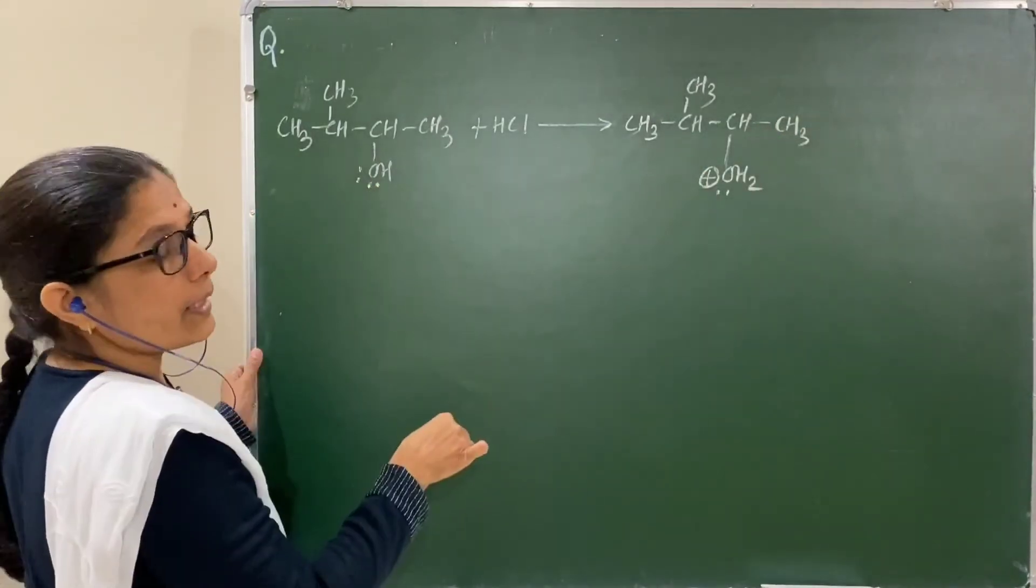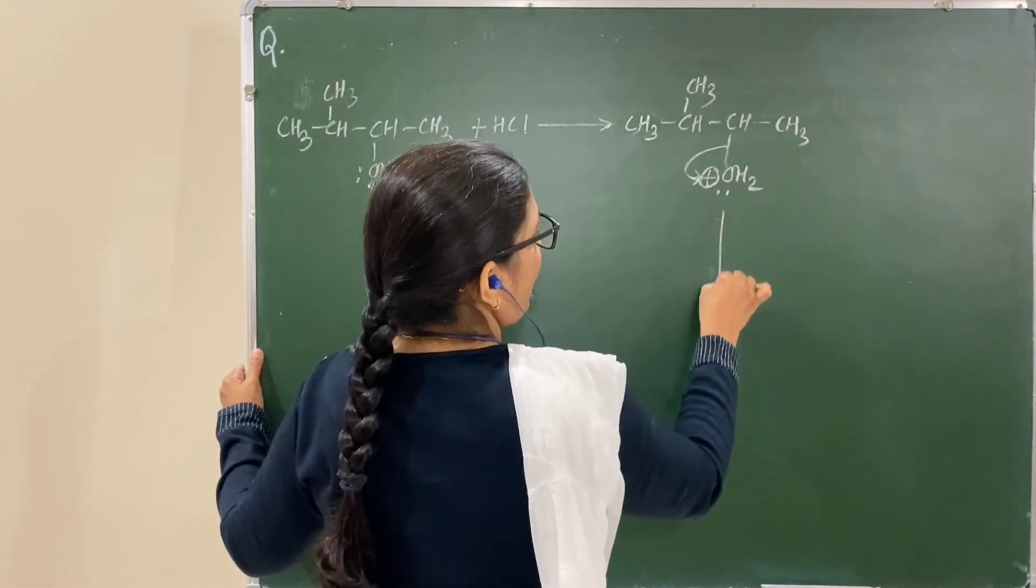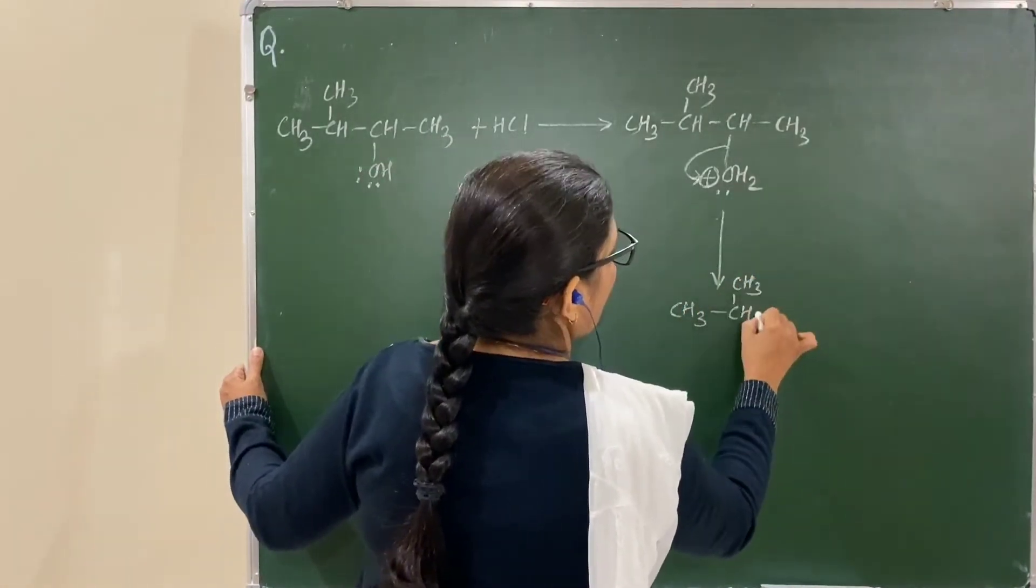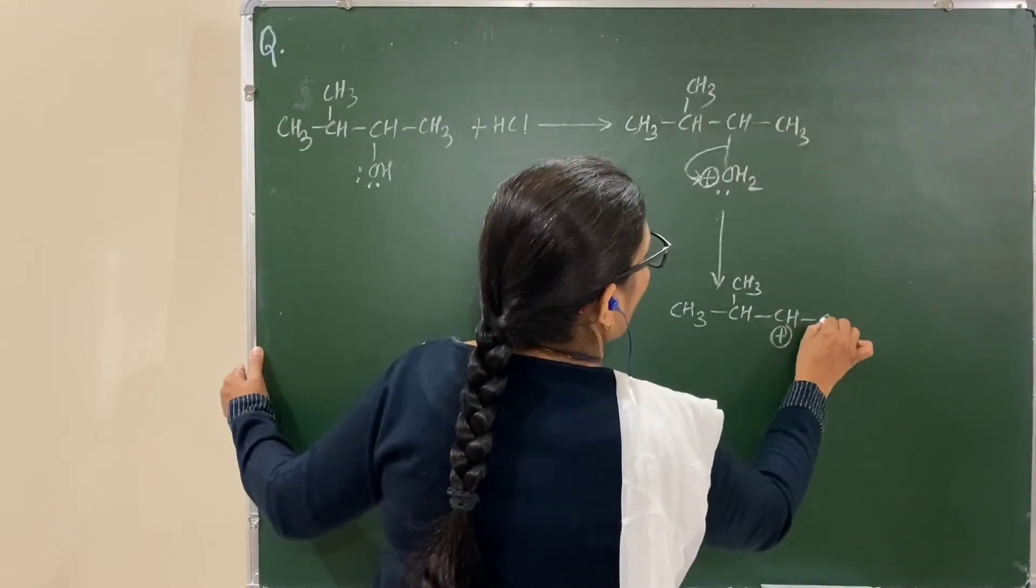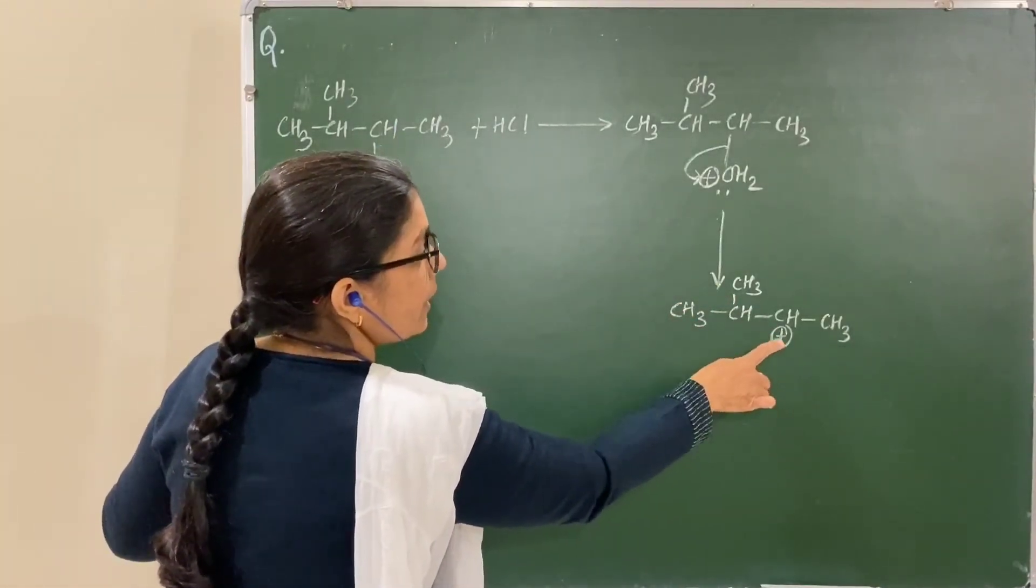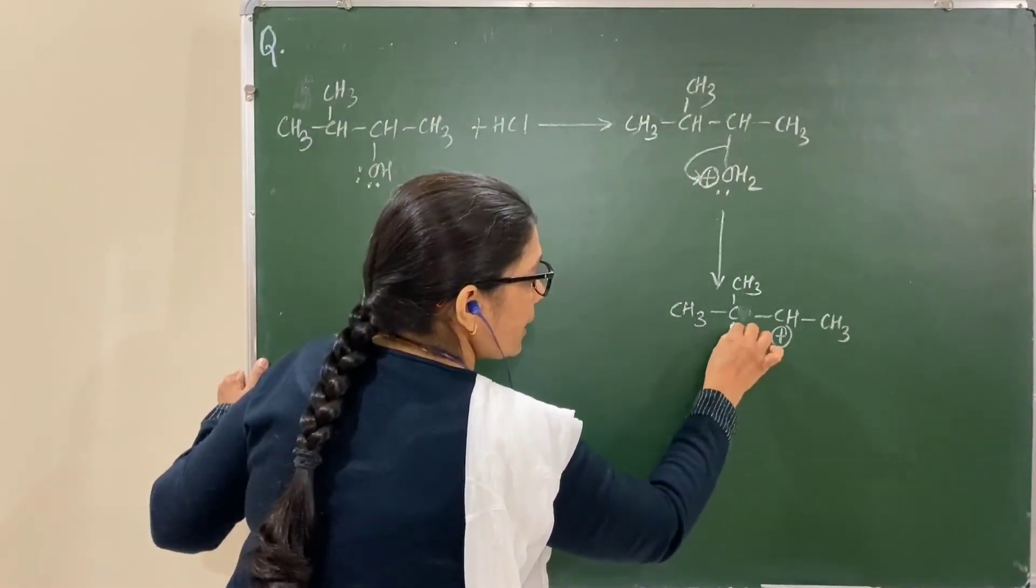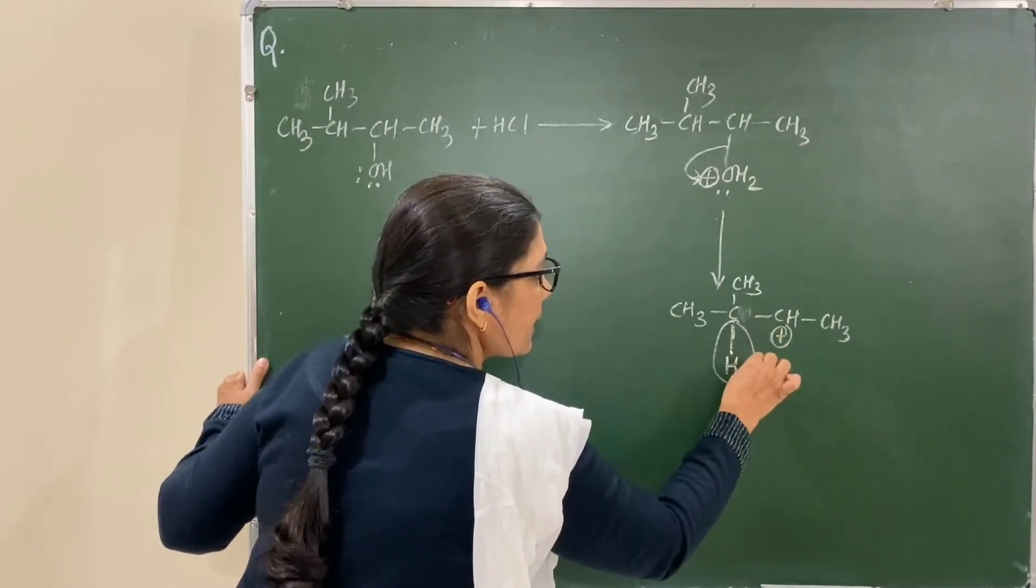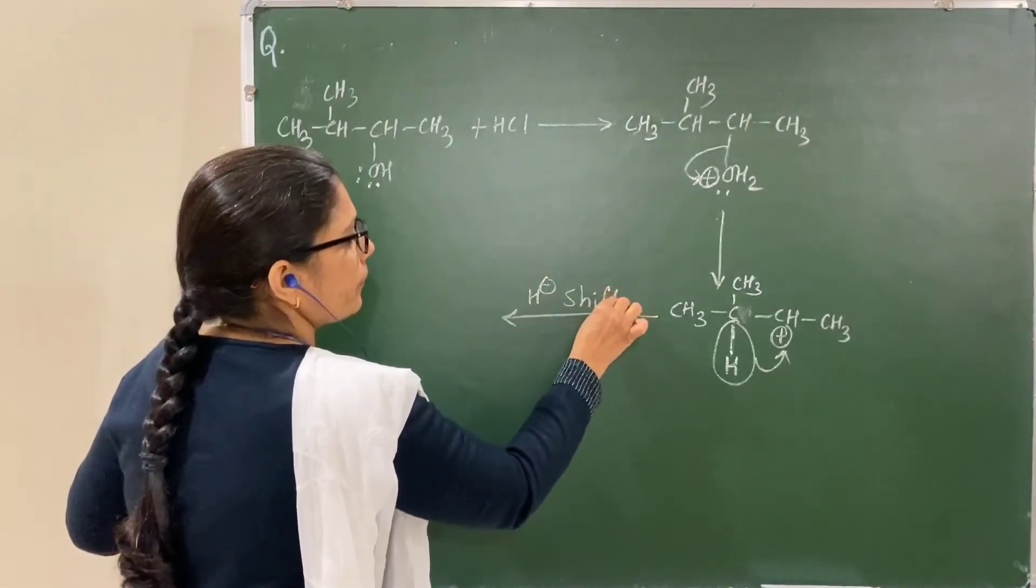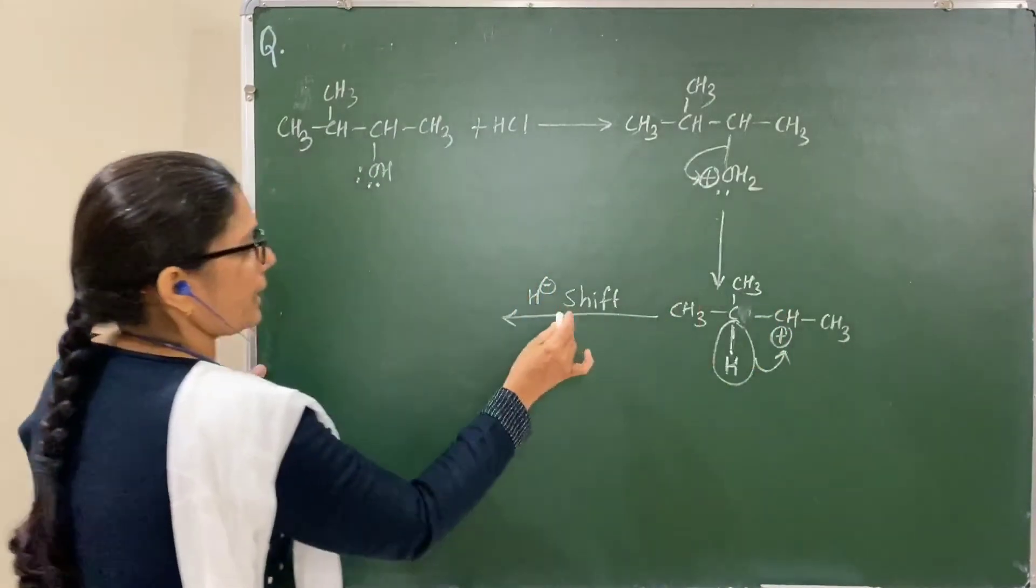Water withdraws electrons, forming a secondary carbocation from the secondary alcohol. Here, a hydrogen atom with its electrons - a hydride, H minus - undergoes hydride shift from here to there. A 1,2-shift takes place.